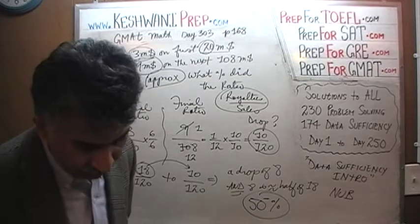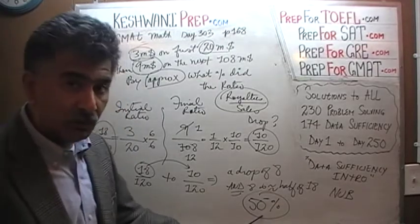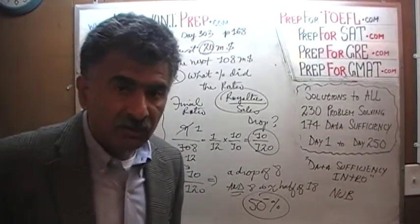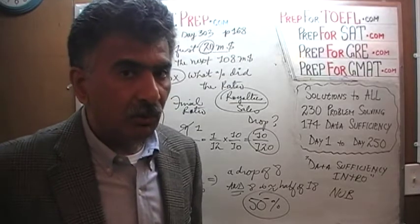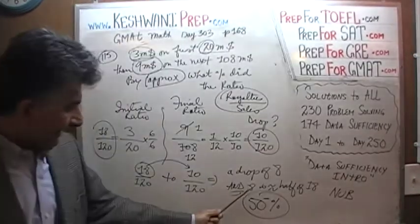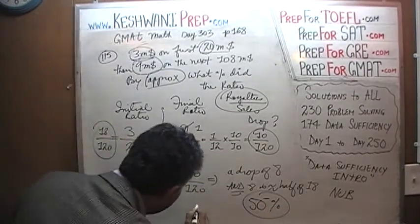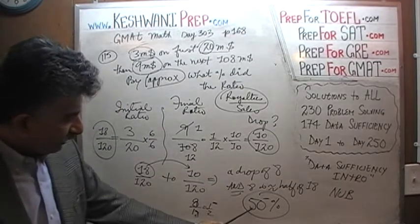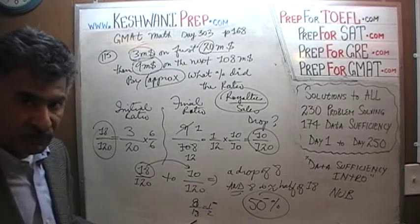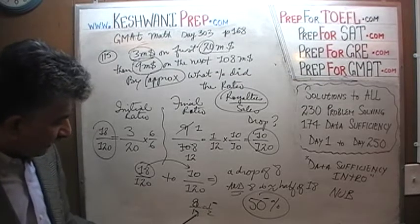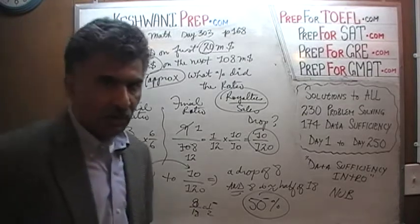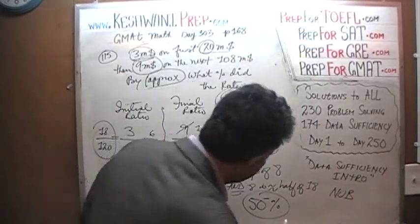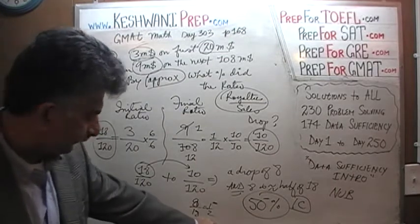You must be fully aware at all times whether you are underestimating or overestimating. Here, 8 divided by 18 is a little less than 9 divided by 18 — we are underestimating. The answer is slightly less than 50%, not 52%. The answer is C, which is 45%.